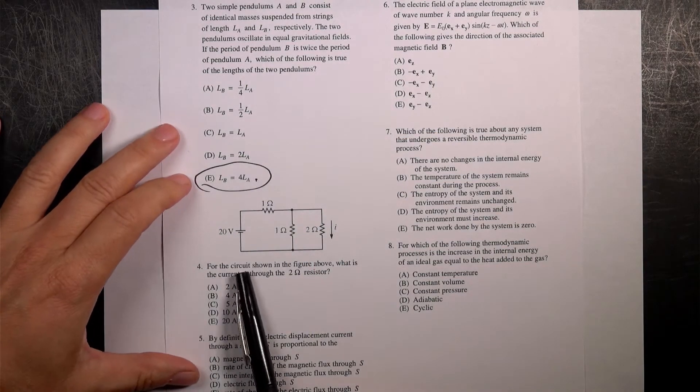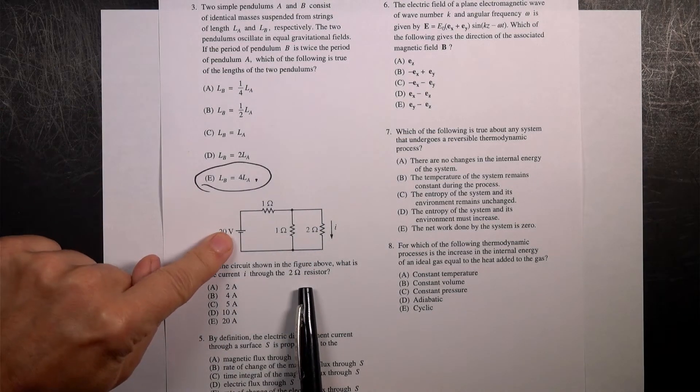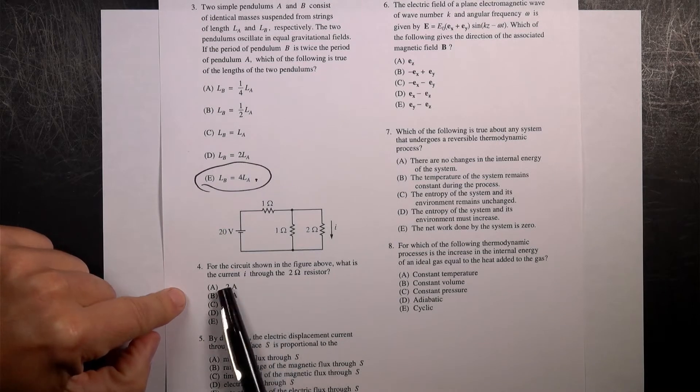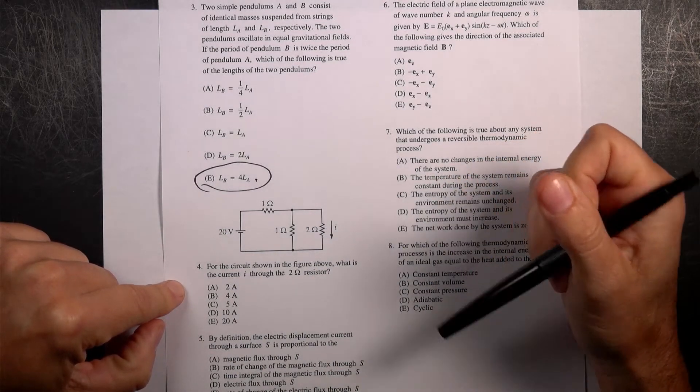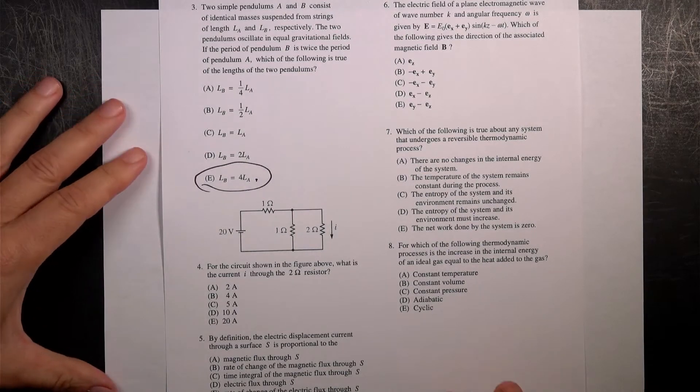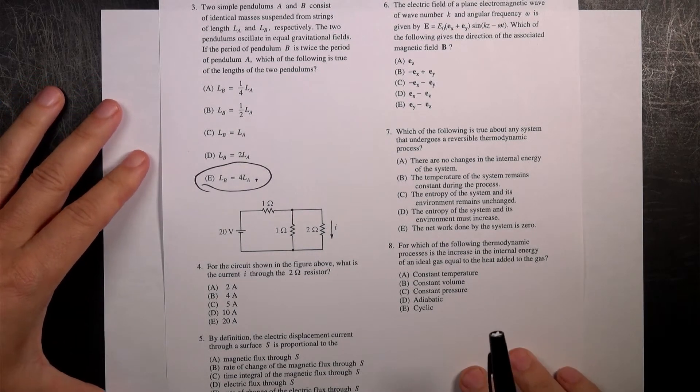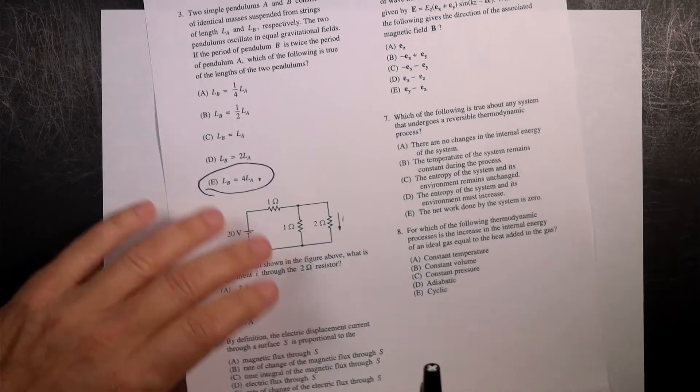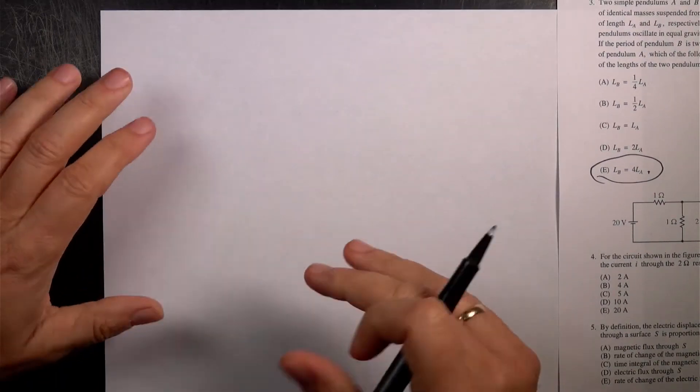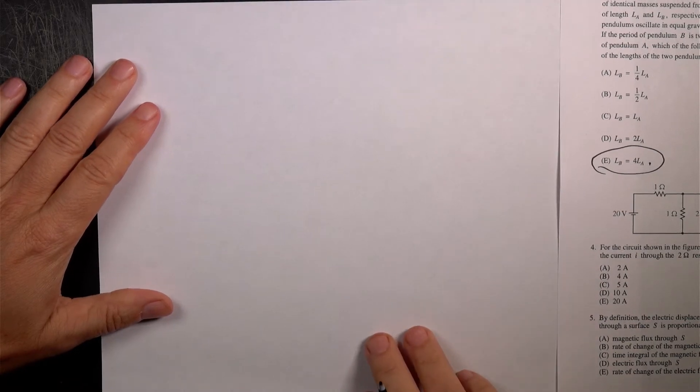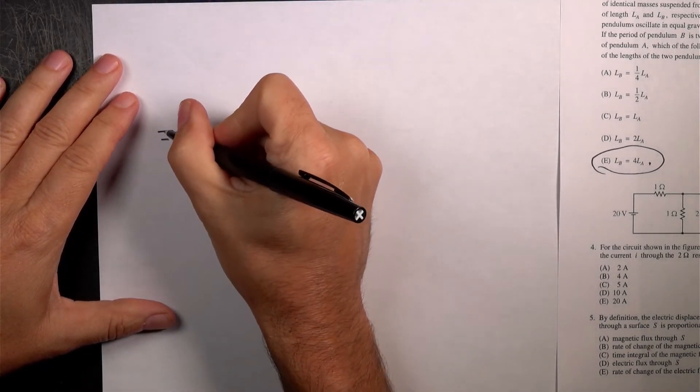Okay, number 4. For the circuit shown in the figure above, what is the current I through the 2 ohm resistor? So right there, what's that current right there? Now, there's a couple ways to do this problem. One of the things with the GRE is speed. You have a lot of problems, 100 problems. So let me just draw the picture, which you wouldn't normally do.